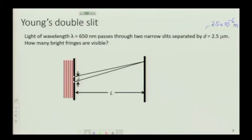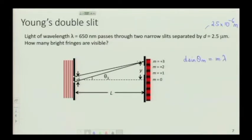And then you might ask how many bright fringes are visible. So what kind of question is that? What does that even mean? Once again, let's write down the equation for the fringes. You have D sine theta M is M times lambda. So sine theta M is M lambda over D.